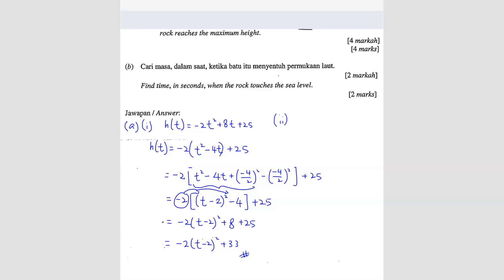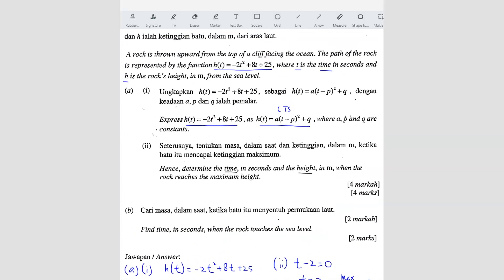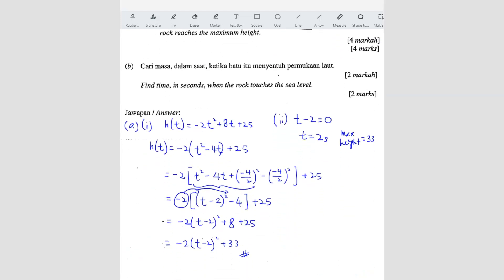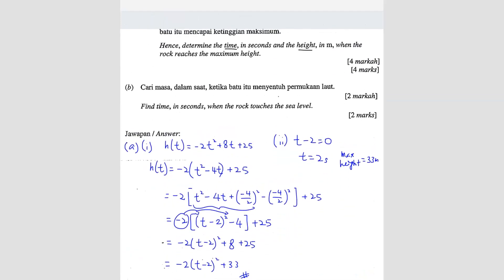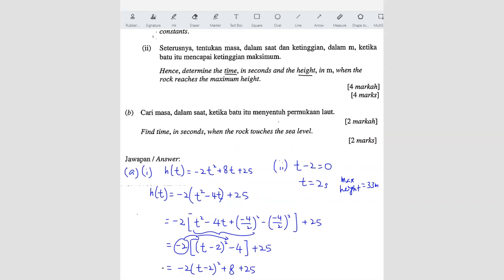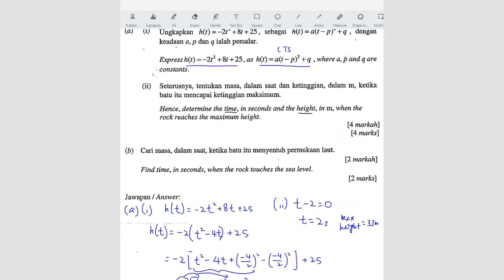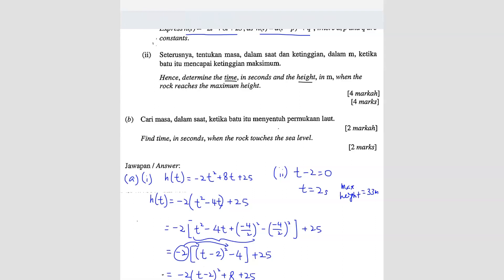So the maximum will be when t minus 2 equals 0, t equals 2. So when the time is 2 seconds, that's when we get the maximum height. And what's the height? The height maximum is 33. It's in meter. The height is in the question that's stated. So 33 meters. So this is the answer. These two.